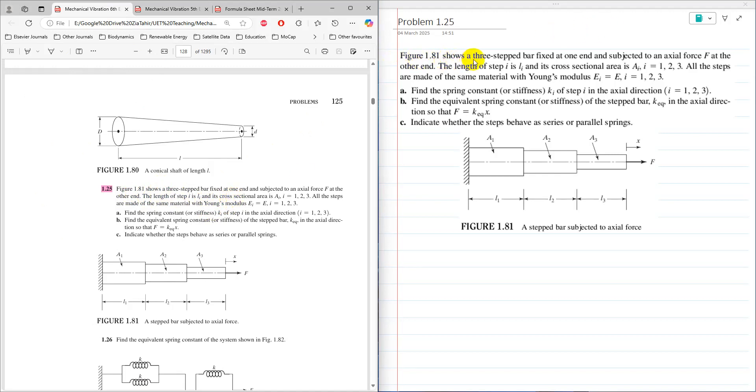Figure 1.8 shows a three-step bar fixed at one end and subjected to an axial force F at the other end. The length of step i is Li and its cross-sectional area is Ai. So for the first step, area is A1 and length is L1. Second, it is A2 and L2. For the third one, area is A3 and length is L3.